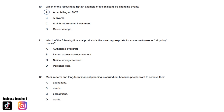Question eleven: Which of the following financial products is the most appropriate for someone to use as rainy day money? A. Authorised overdraft. B. Instant access savings account. C. Notice savings account. Or D. Personal loan. And the answer is B. Instant access savings account.